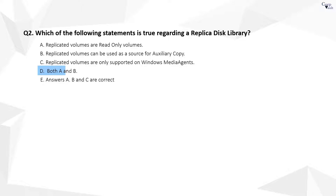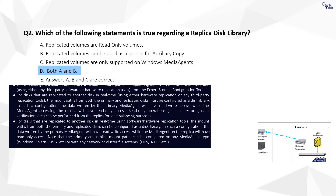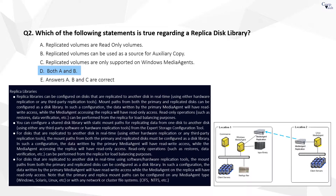Question 2. The correct answer is D. In a replica disk library, the data written by the primary media agent will have read-write access, while the media agent accessing the replica will have read-only access. Read-only operations, such as restores, data verification, etc., can be performed from the replica for load balancing purposes.